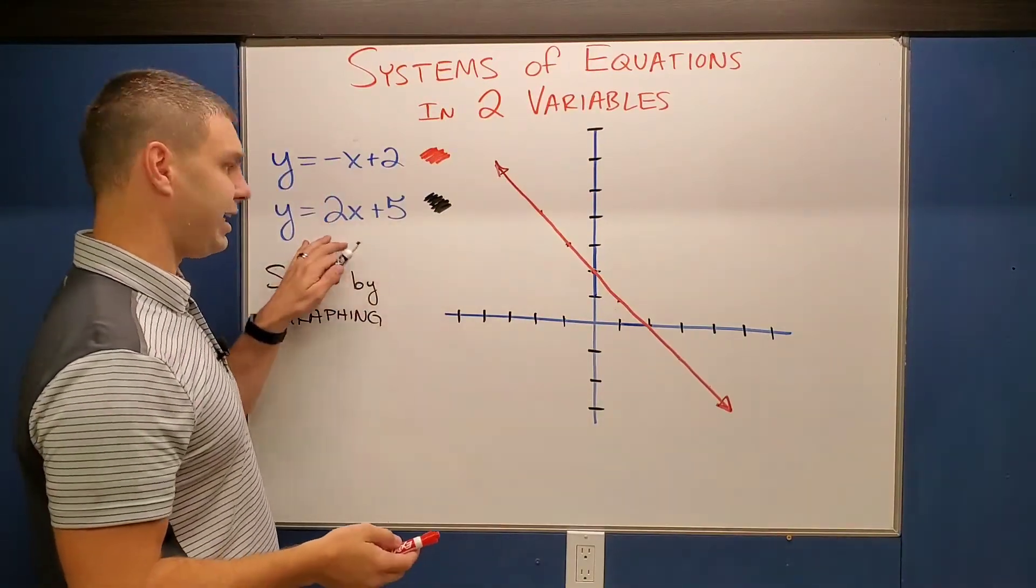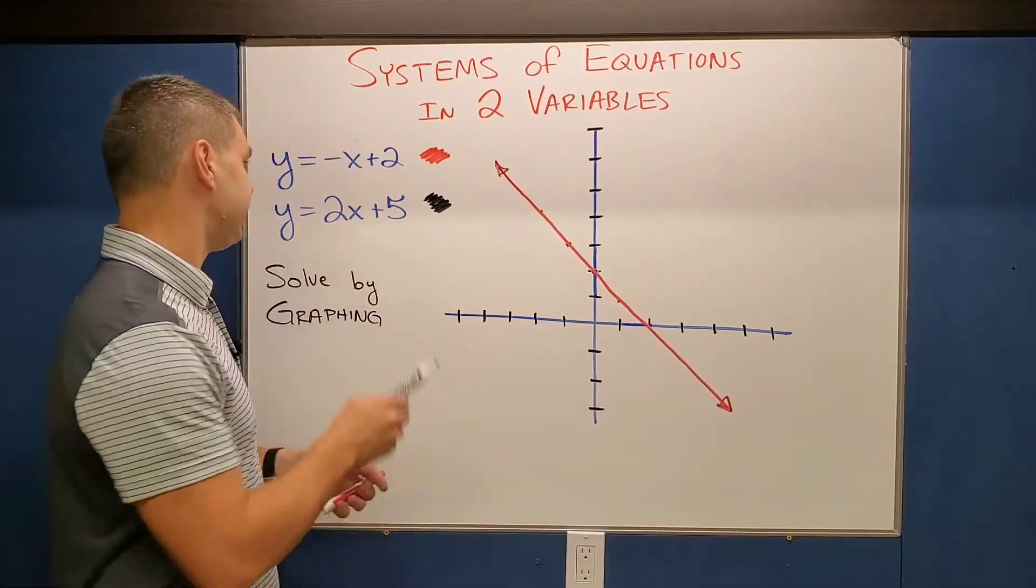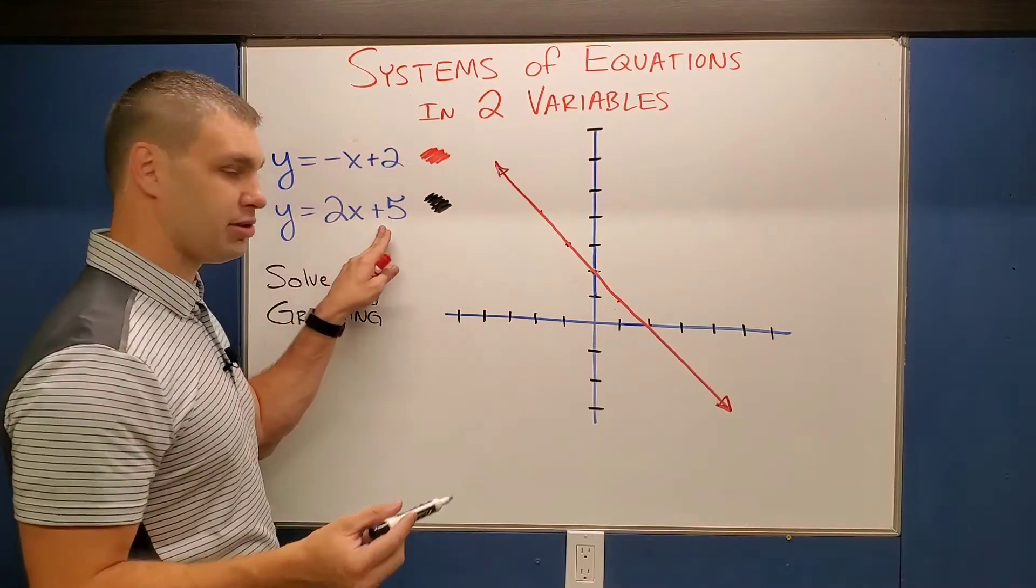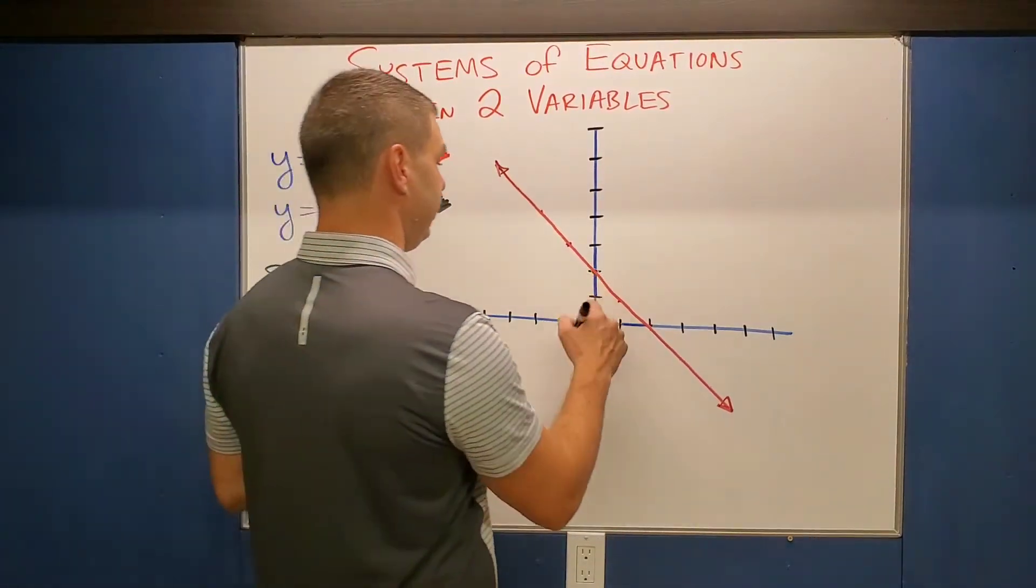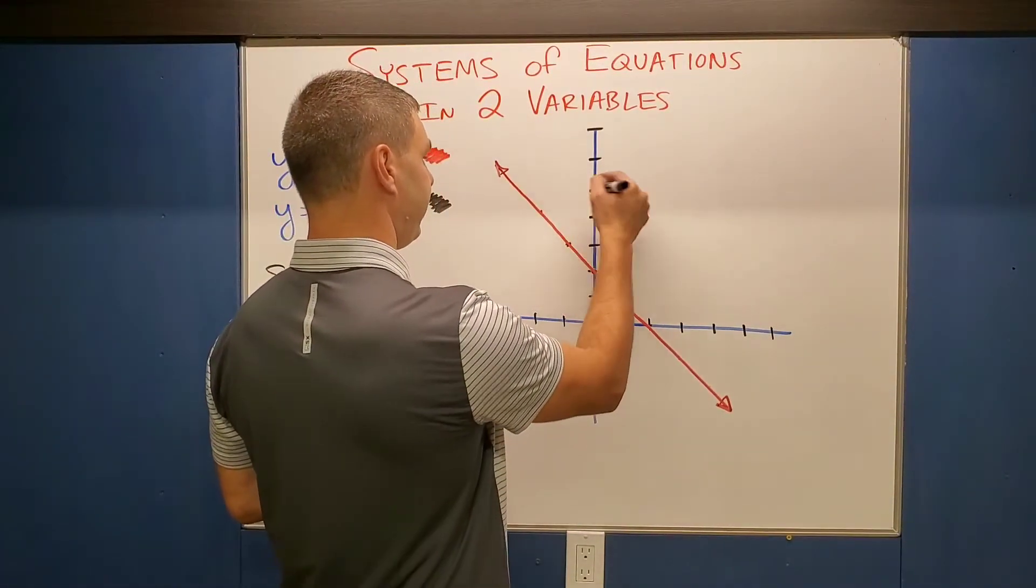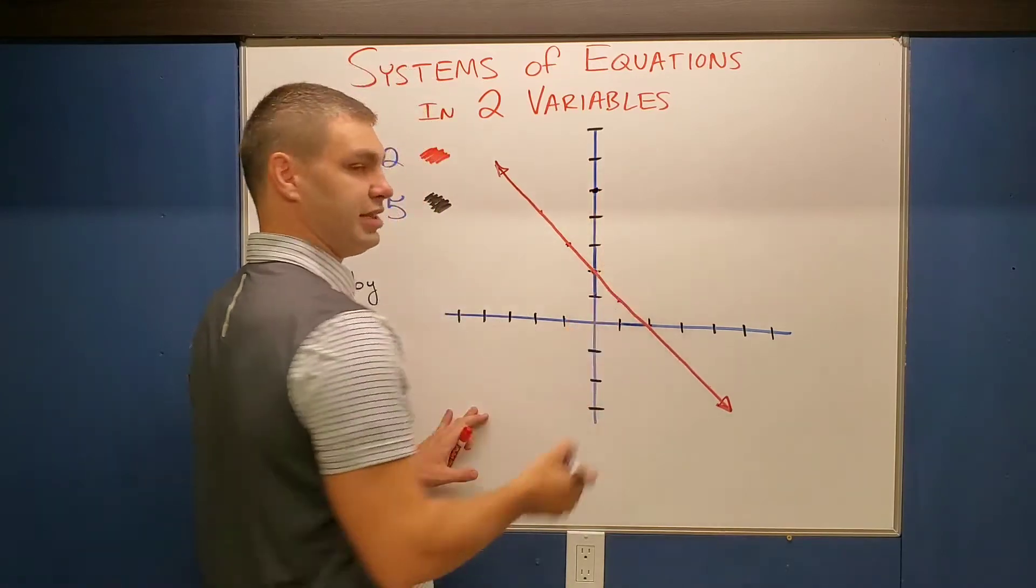So this one, then I have the second one, which is in black. This says y equals two x plus five. So I'm going to start at five as my y intercept. One, two, three, four, five. Put a dot right there.